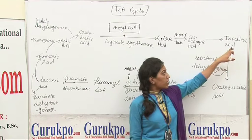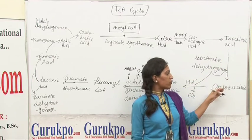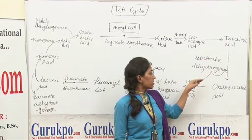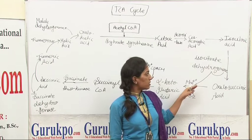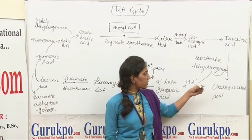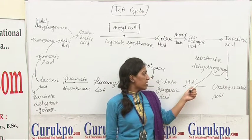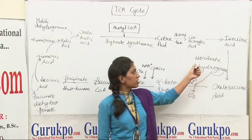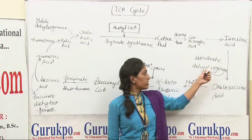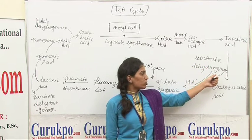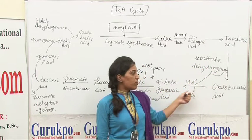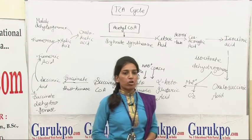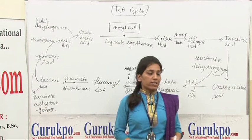In the first step, isocitric acid converts into oxalosuccinic acid, and in the second step it converts into alpha-ketoglutaric acid in the presence of isocitrate dehydrogenase enzyme and magnesium. In this reaction, carbon dioxide is released.